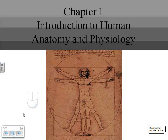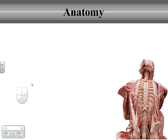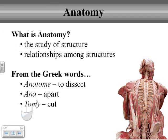Our first section of this particular chapter on Introduction to Anatomy and Physiology is really going to focus on differentiating between actual anatomy and physiology. If we focus on anatomy, the key information is that anatomy is really talking about structure — exactly what everything is made of within the human body.